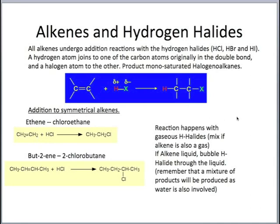The reaction usually happens when the hydrogen halide is gaseous, and if the alkene is also a gas you can simply mix the two. However, if the alkene is liquid, you can bubble hydrogen halide through it. But if water is present, remember there will be a mixture of products because water will also get involved in the reaction. For example, ethene reacting with hydrogen chloride gives chloroethane.